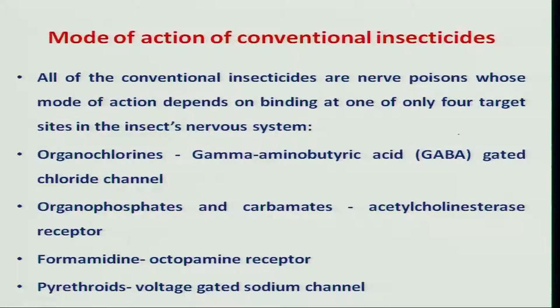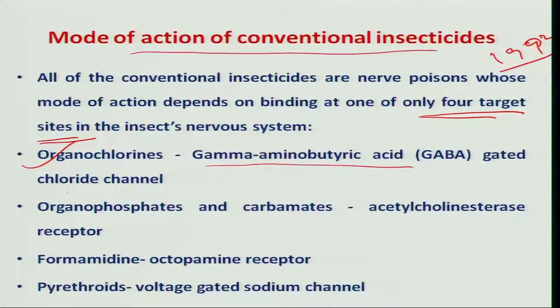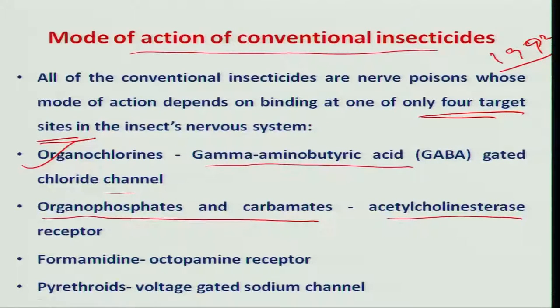Today we will understand how these pesticides act on insects, that is the mode of action of these insecticides. The insecticides act on the nervous system of the insect at four target sites. The first: organochlorines mainly acting on the gamma-amino-butyric acid gated chloride channel. Another group, organophosphates and carbamates, they are mainly inhibiting the acetylcholinesterase enzyme, which controls the production of acetylcholine, the chemical mainly responsible for transferring impulses from one synapse to another in the insect nervous system.